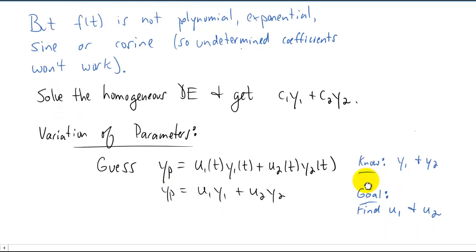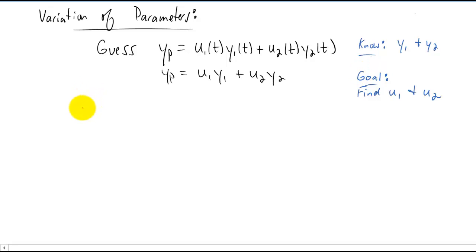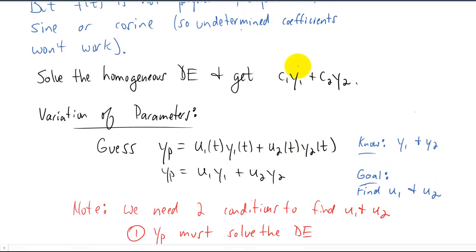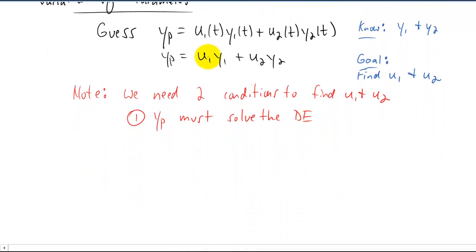Before we start plugging things in and getting going on this process, I do want to make one note. The note is that we actually need two conditions to find u1 and u2. Just like when we had c1 and c2 in a general solution to a differential equation, we needed two initial conditions to find c1 and c2. We actually need to satisfy two different conditions to find u1 and u2.